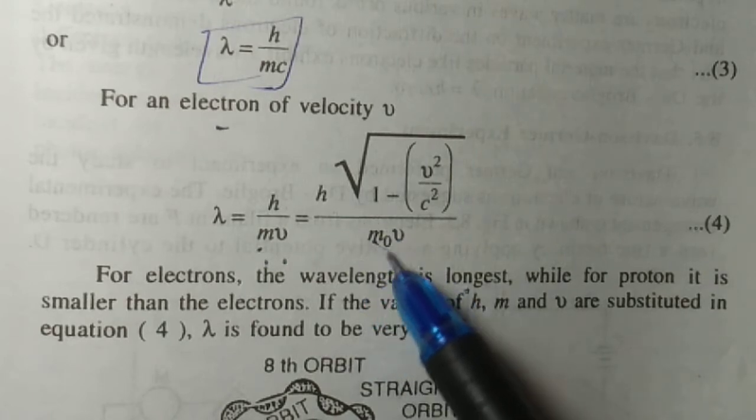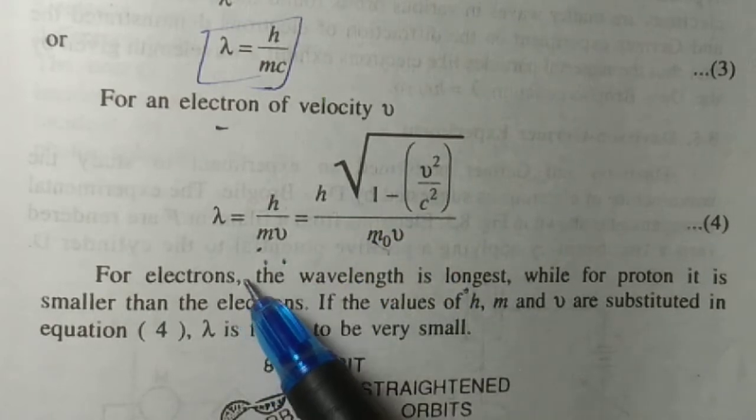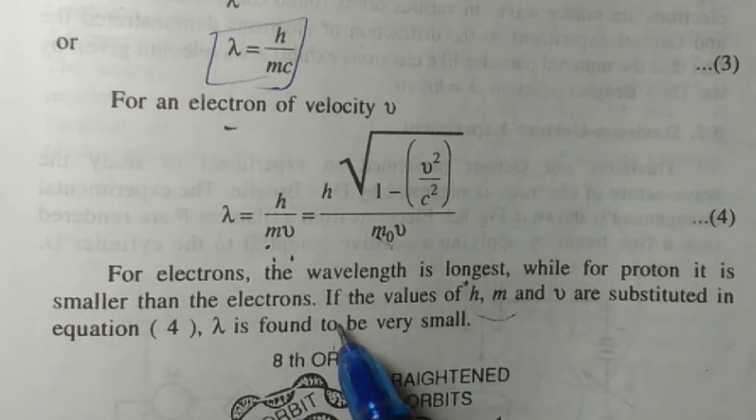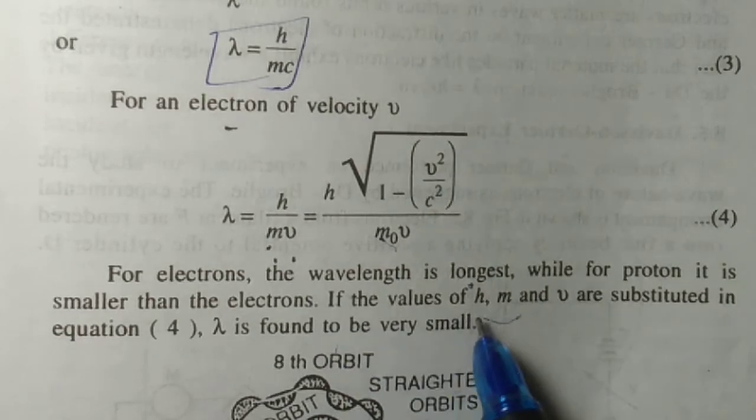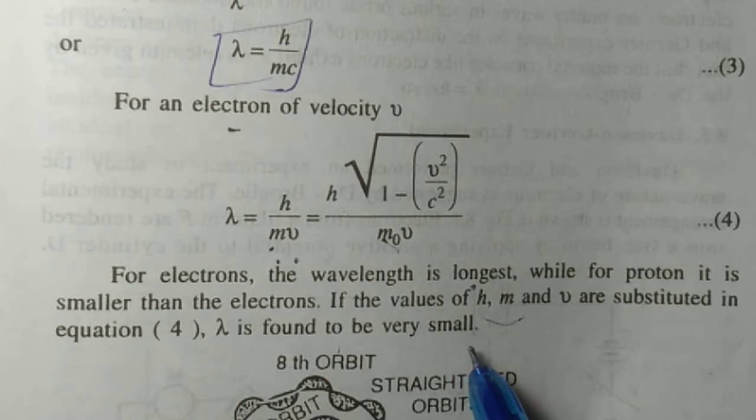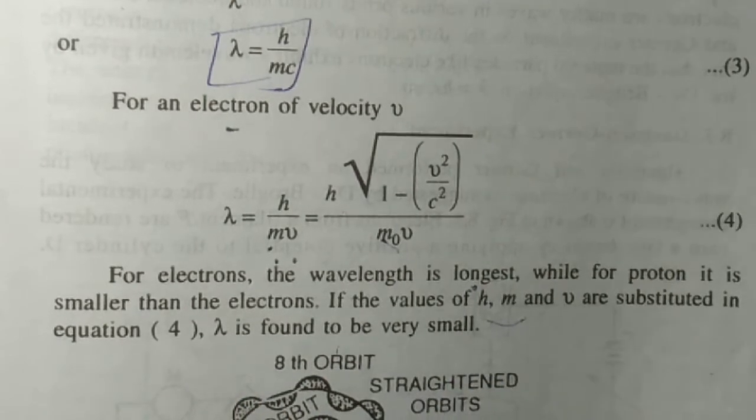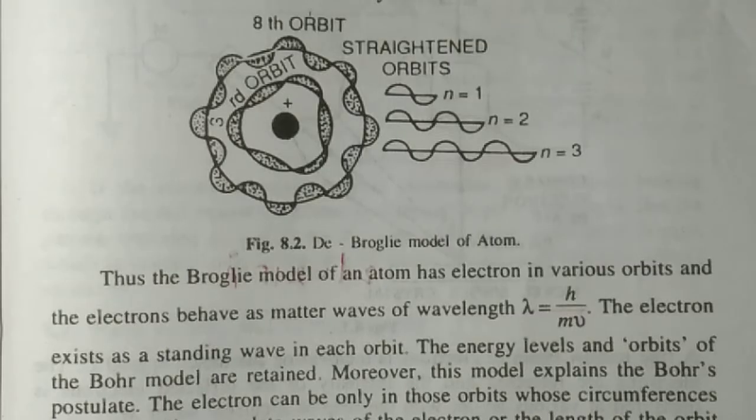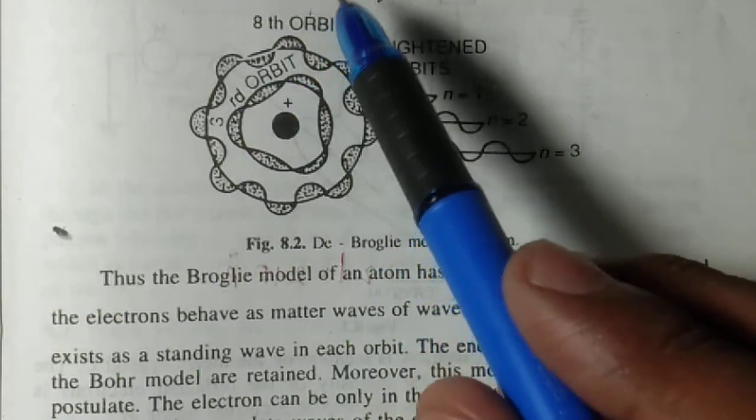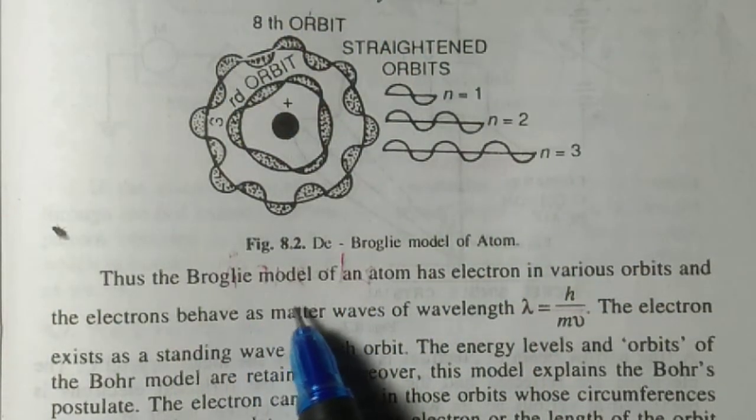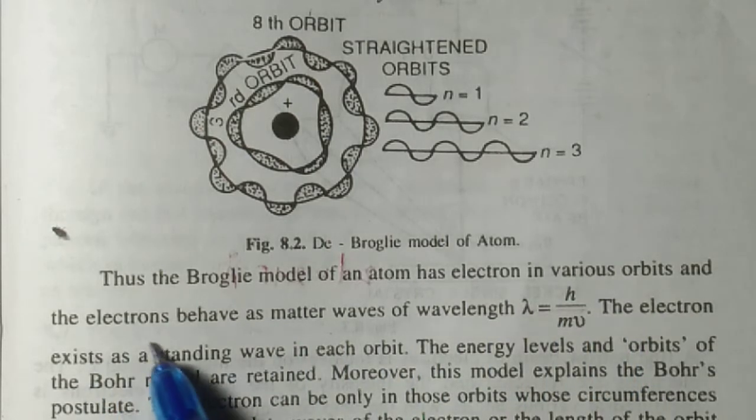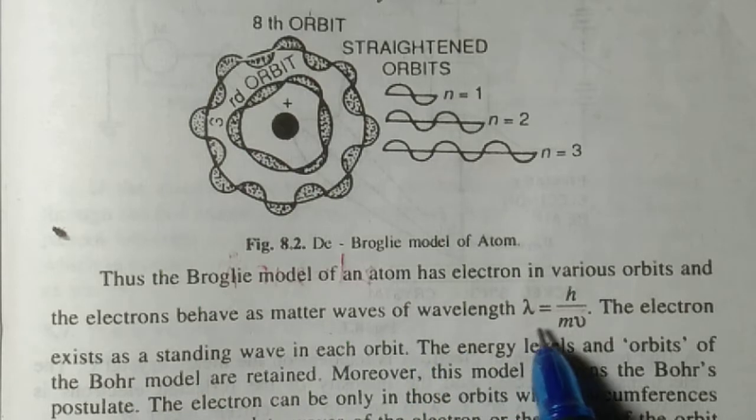For proton, it is smaller than the electron because proton has greater mass. If the values of h, m, and v are substituted in the equation, λ is found to be very small. Thus, the de Broglie model of an atom has electrons in various orbits.